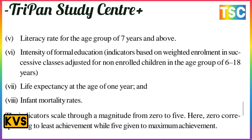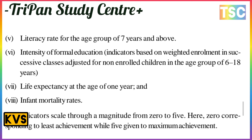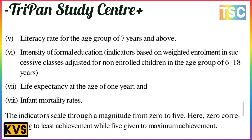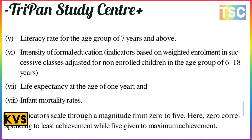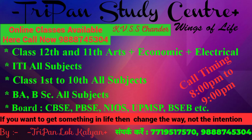The sixth indicator is the intensity of formal education, based on weighted enrollment in successive classes adjusted for non-enrolled children in the age group of six to eighteen years. The seventh indicator is life expectancy at age one and the infant mortality rate. All indicators are scaled from zero to five, where zero corresponds to the lowest achievement and five to the maximum.